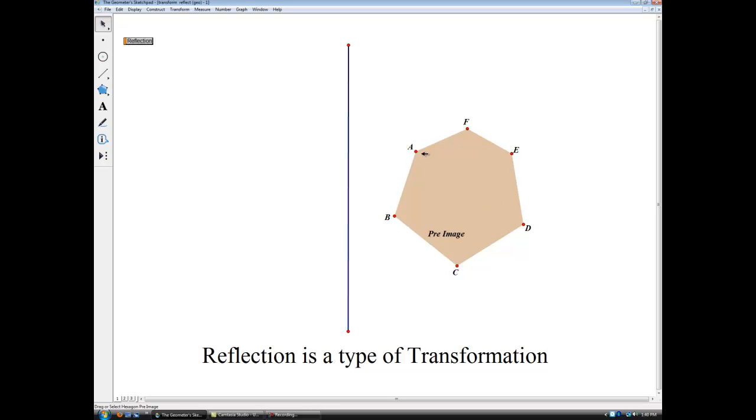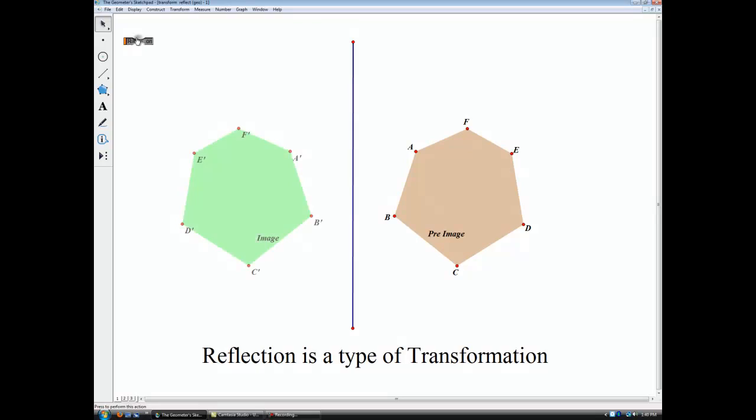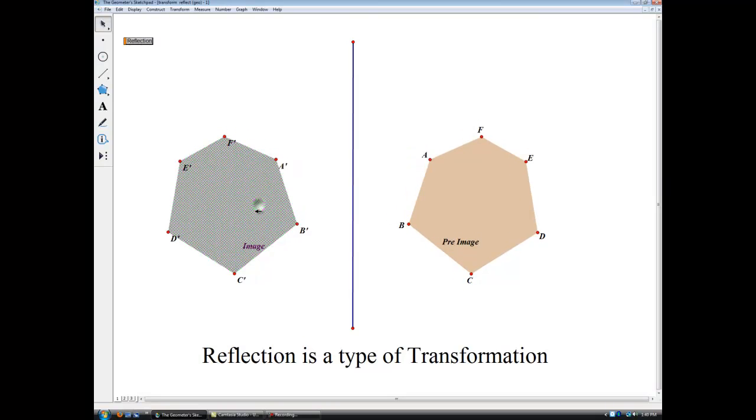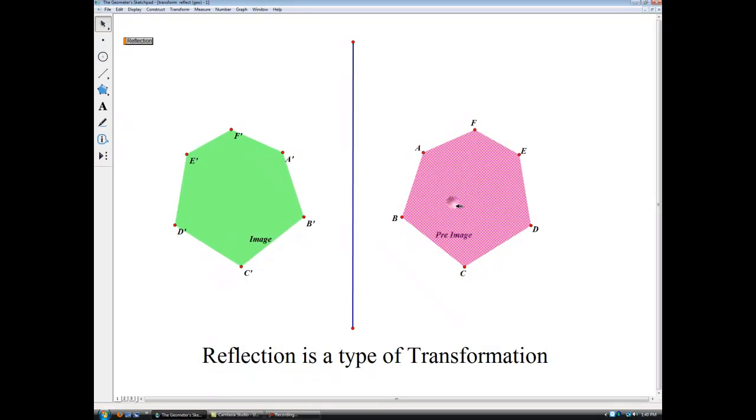Now, what we begin with here, there's a vocabulary word called the pre-image. When we perform some kind of transformation, the result is called the image. What I did here is I used this line to be my line of reflection, which is what you need. You need some kind of line of reflection in order to reflect. Then when I click the button here, you'll see there is my image of this pre-image.